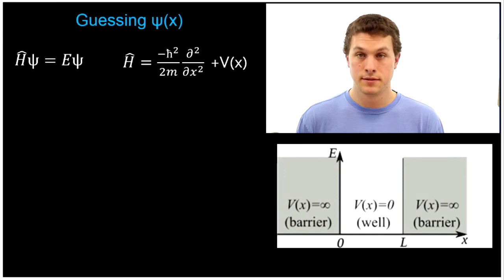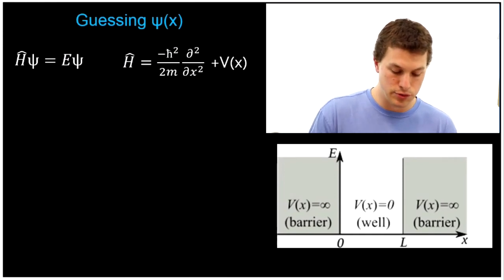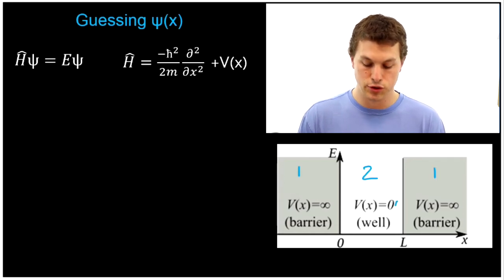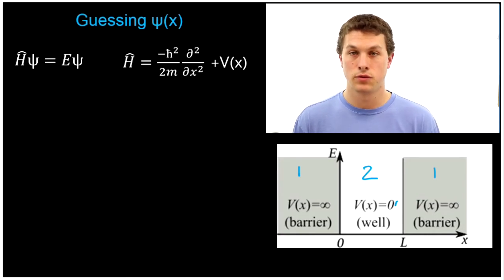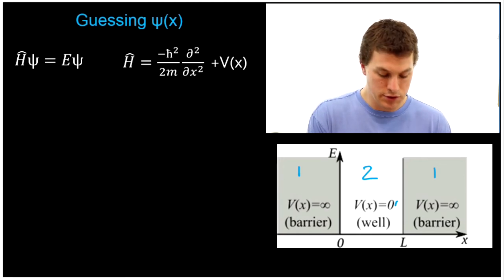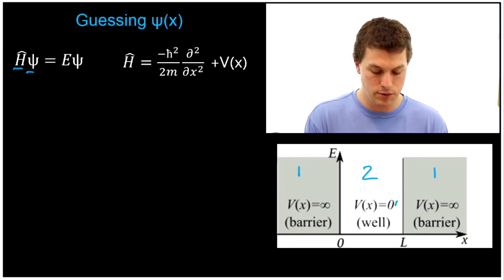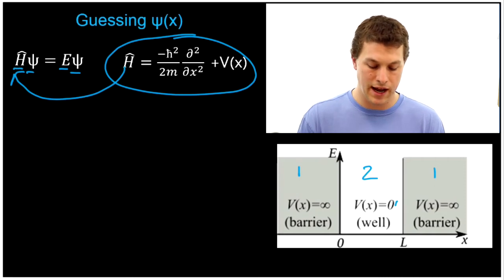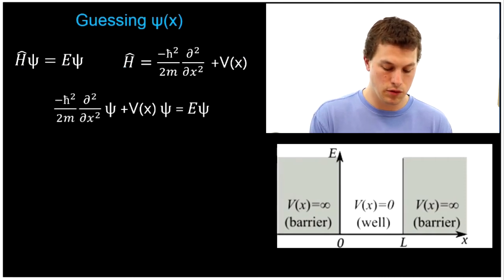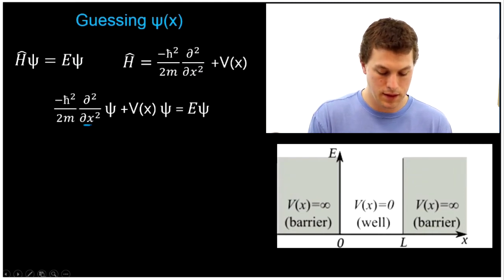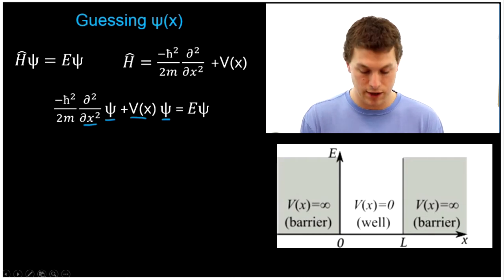Let's guess psi of x in each of our regions. We really have two regions: region one where the potential is infinite, that's outside our box, and region two which is in the middle. The way we're going to guess what this function looks like is using the time-independent Schrödinger equation. If we multiply the Hamiltonian times some wave function, we get back out the energy times that same wave function.